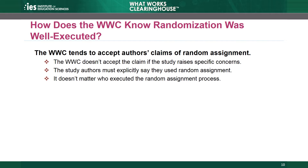Also, the WWC isn't concerned about who actually executed the random assignment, as long as there is no reason to believe the study used a compromised randomization process. For example, some studies take advantage of a pre-existing lottery, such as those often conducted for charter school admissions, where the researchers had nothing to do with the random assignment process. That would be fine for the WWC.